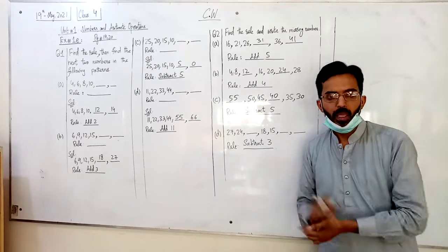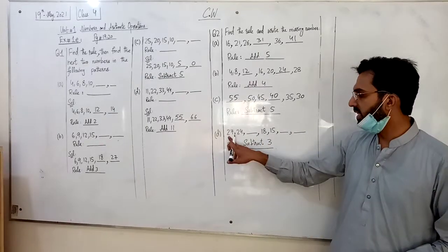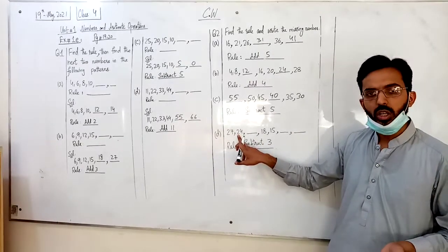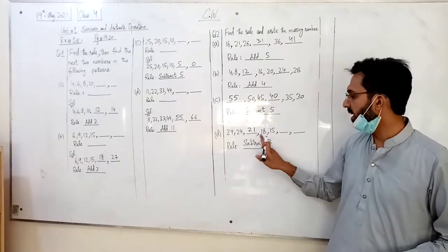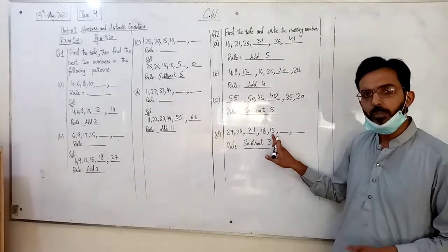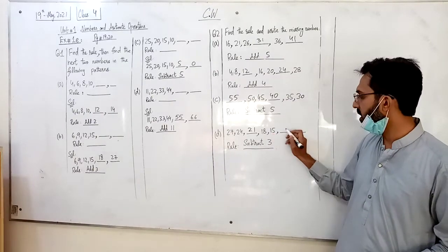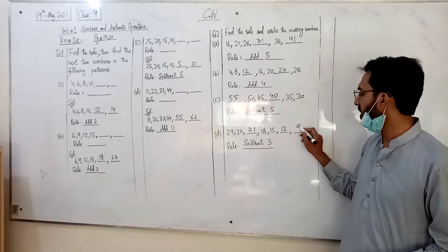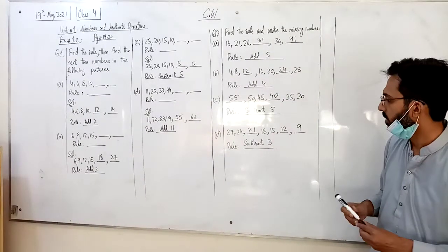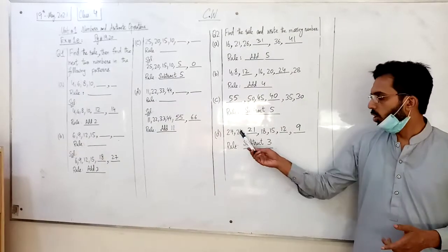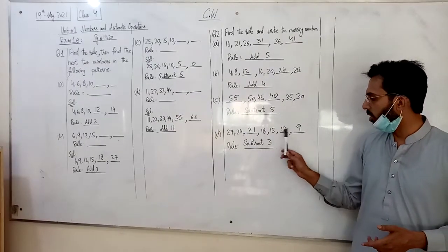तो इसको pattern follow हो रहा है, तो सबकी 3 minus हो रहा है. तो आप minus कर दे. 27 minus 3 is 24, 24 minus 3 is 21, 21 minus 3 is 18, 18 minus 3 is 15, 15 minus 3 is 12, 12 minus 3 is 9. ठीके? तो इसको pattern में है: 21, 12, 9. सबकी 3 subtract हो रहा है.